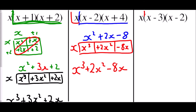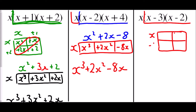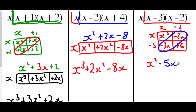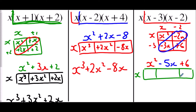Lastly, do exactly the same again - looking at the end brackets x minus 3 and x minus 2. Using a grid: x squared, negative 2x, negative 3x, and positive 6. Simplifying the middle, that's negative 5x, plus 6. Now multiplying everything by x: x cubed take away 5x squared plus 6x. So the answer is x cubed take away 5x squared plus 6x.